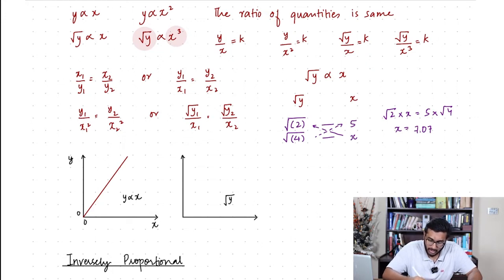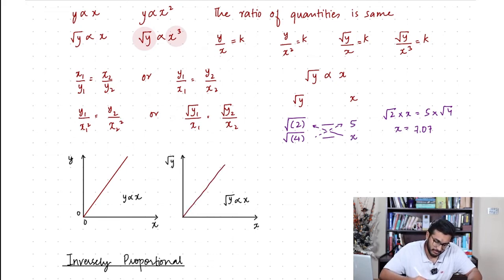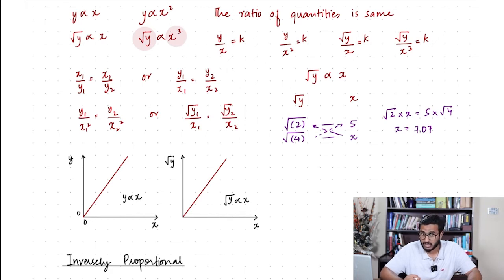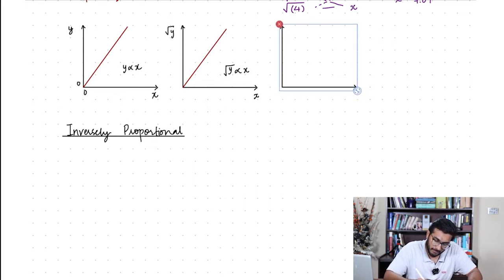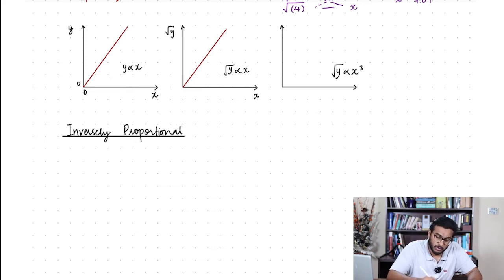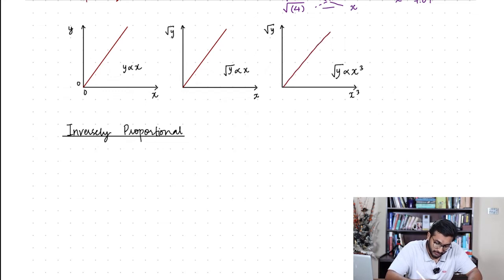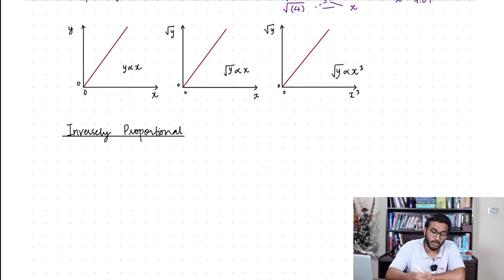Similarly, if √y was proportional to x, then a graph of √y against x will also give you a straight line through the origin. And if the equation was √y directly proportional to x cubed, then a graph of √y against x³ is again going to be a straight line passing through the origin. So whenever two quantities are directly proportional to one another, the graph is a straight line passing through the origin — these are the two important features.